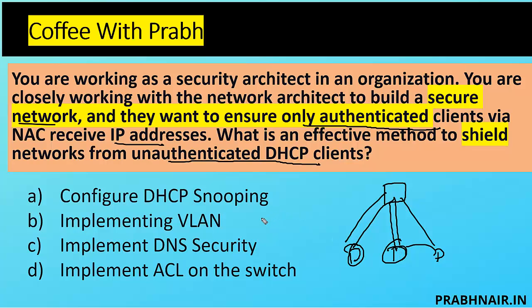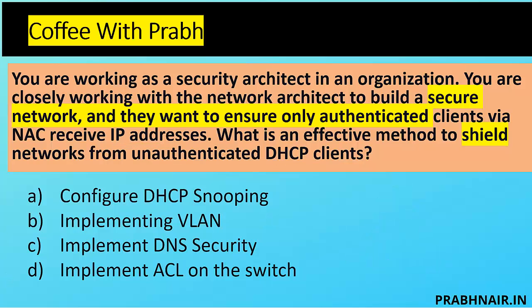Option A: configure DHCP snooping — this is an effective method to shield the network from unauthenticated DHCP clients. DHCP snooping ensures the DHCP server can assign IP addresses only to selected systems identified by MAC address. Advanced network switches can also direct traffic toward the legitimate DHCP server and restrict systems from becoming a rogue DHCP server. Option B, VLAN, has no connection to unauthenticated DHCP clients — it's for layer 2 logical segmentation. DNS security is about name restrictions, and ACL on a switch is more like port security. So the answer is A.